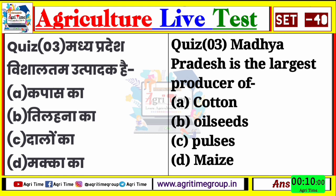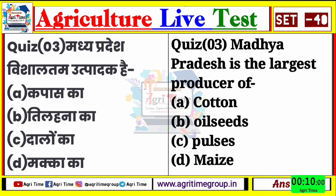Quiz number three का जिनों ने भी C comment किया, उनका answer right है। मध्यप्रदेश विलसाल कम उत्पादक है - दालों का सबसे बड़ा उत्पादक राज्य है मध्यप्रदेश। चलिए बढ़ते हैं अगले question के ओर quiz number four।